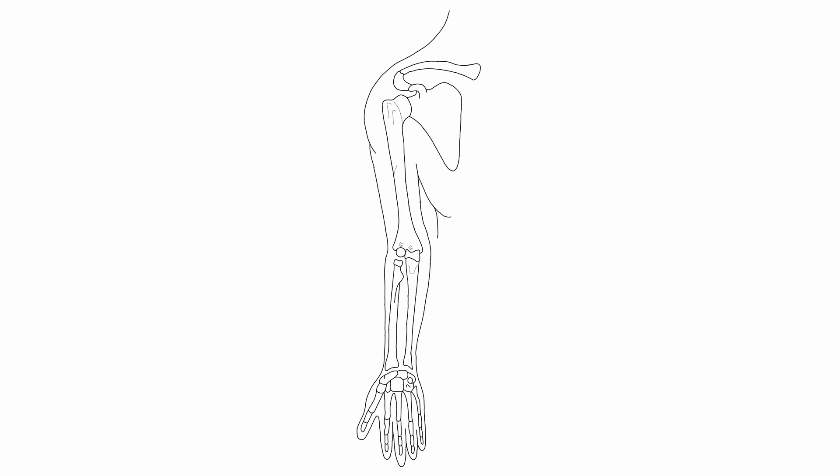The upper limbs are connected to the trunk by the pectoral girdle. The limb girdle is defined as bones which connect the limbs to the axial skeleton. The pectoral girdle is composed of two bones: the scapula and the clavicle. The scapula is connected to the clavicle by the acromioclavicular joint, and the clavicle is attached to the axial skeleton by the sternoclavicular joint. The pectoral girdle is not a complete girdle because it is attached to the axial skeleton only anteriorly.